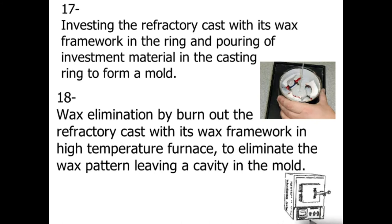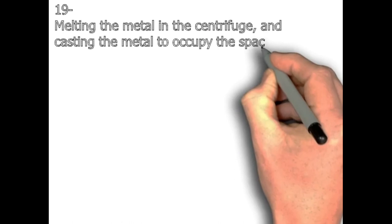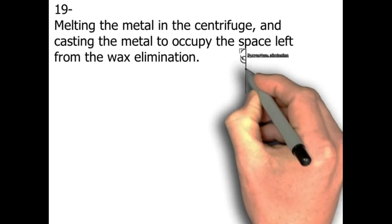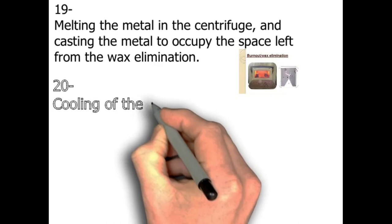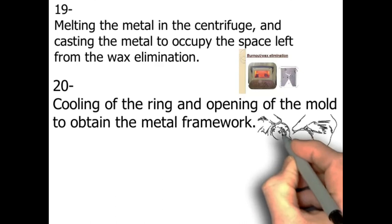The picture shows the muffle furnace which has a very high temperature. Step number nineteen: melting the metal in the centrifuge and casting the metal to occupy the space left from the wax elimination — that's a laboratory step. Step number twenty: cooling of the ring and opening of the mold to obtain the metal framework — that's a laboratory step.